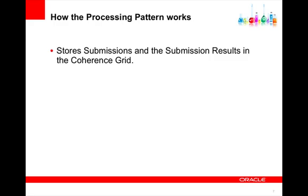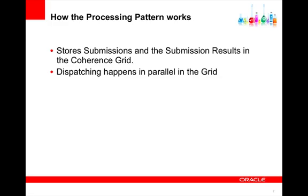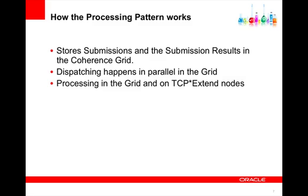The processing pattern uses the Coherence grid and stores submissions and submission results in caches in the Coherence grid. By the distributed nature of the Coherence grid, dispatching of this work happens in parallel. And as dispatching happens and gets distributed in the grid, processing of the actual work can happen either in the grid or on nodes connecting using Coherence Extend.